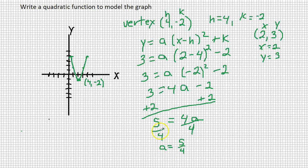So my equation then is going to be y equals 5 fourths, parentheses, x minus our h is 4, squared. So k is negative 2, so minus 2, and this is in vertex form. There we go. Have fun finding your equations. Bye-bye.